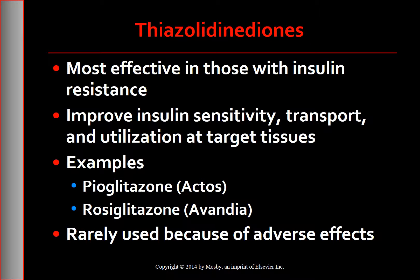The next group of drugs are called thiazolidinediones, sometimes referred to as insulin sensitizers. These agents include pioglitazone and rosiglitazone. They are most effective for people who have insulin resistance, as they improve insulin sensitivity, transport, and utilization at target tissues. Because they do not increase insulin production, thiazolidinediones do not cause hypoglycemia when used alone. However, these drugs are rarely used today because of their adverse effects.